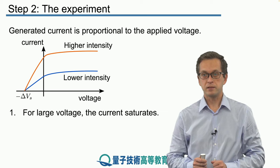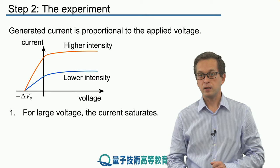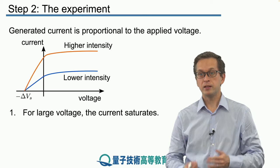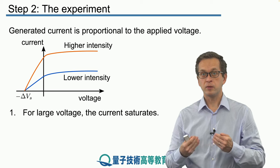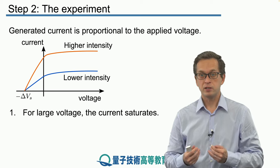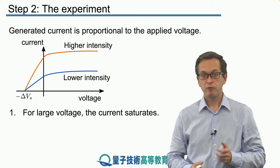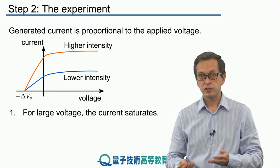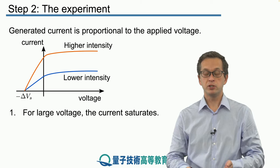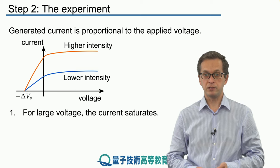This makes sense. If we shine light on the metal plate, electrons are ejected in certain numbers and with certain kinetic energies. If we apply a certain voltage, some of these electrons will have enough energy to reach the collector plate and produce electric current.